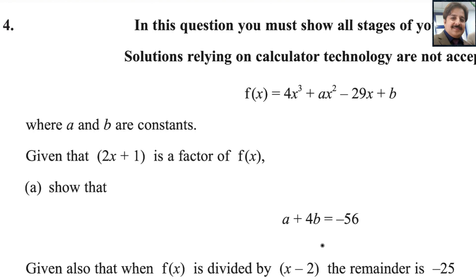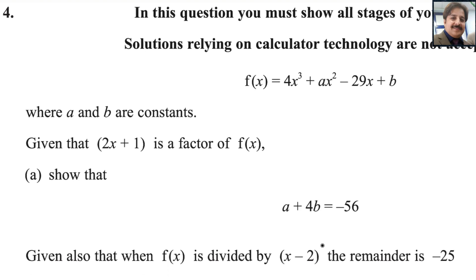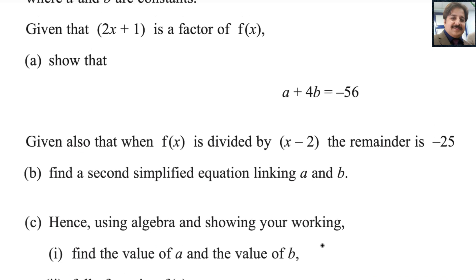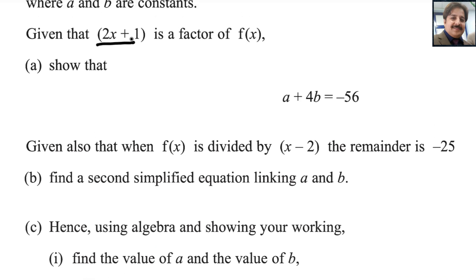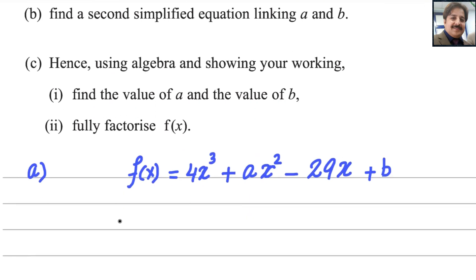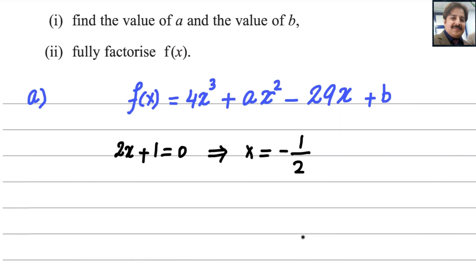This question could be solved by using the remainder or factor theorem. We will start with the given function. Since 2x plus 1 is a factor of f of x, we can get the value of x from here by setting 2x plus 1 equal to 0, which implies x equals negative 1 over 2. Substitute this value into the given equation.